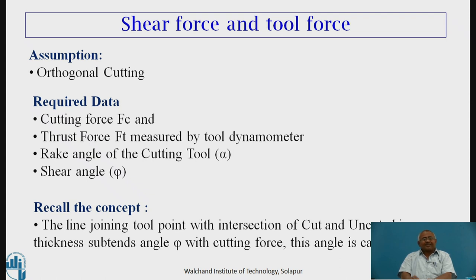The required data will be: cutting force denoted by FC, thrust force denoted by FT. Cutting force acts in the direction of tool travel and thrust force acts perpendicular to cutting force; both are measured by tool dynamometer in Newtons. The rake angle of the cutting tool, denoted by alpha, is recorded from the tool specifications, and the shear angle denoted by phi shall also be known.